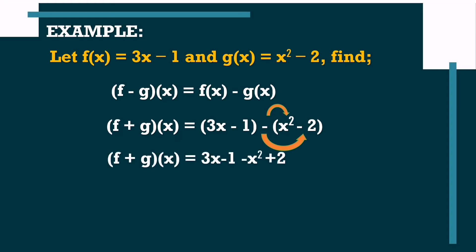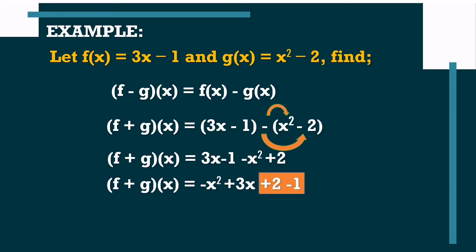So, we'll have this result. Then, we are going to arrange our answer. We will have negative x squared plus 3x plus 2 minus 1. Combining similar terms — positive 2 and negative 1 — since we have different signs, we subtract the two terms. So, our final result will be f minus g of x is equal to negative x squared plus 3x plus 1.